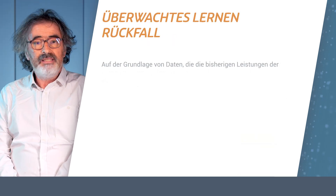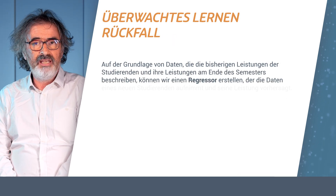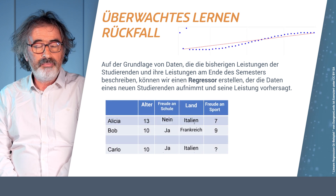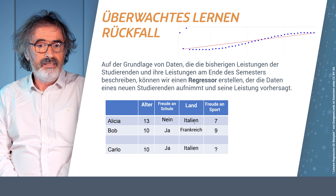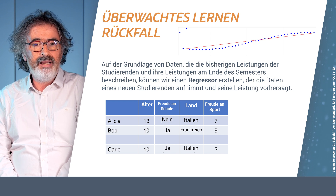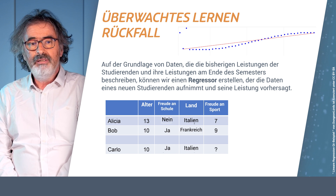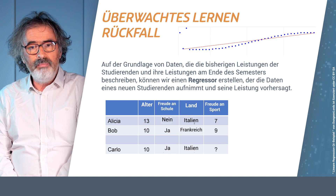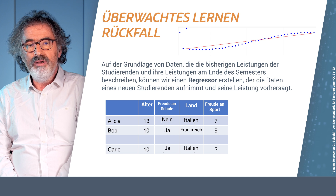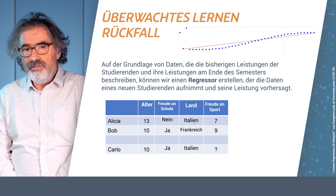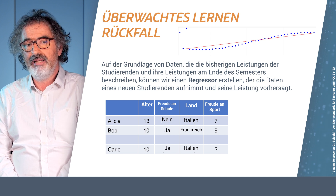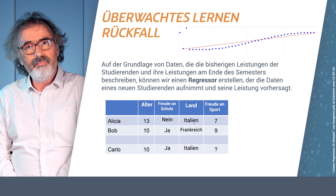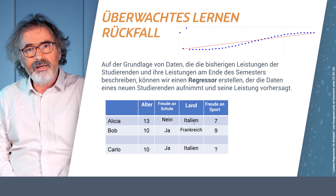Instead of predicting just yes or no, we could predict a number — a value — perhaps a grade, in the case of Alicia, Bob, and Carlo. Again, we have data for Alicia and Bob for which we know the outcome: we know their grade in mathematics. Now we would like to predict the grade in mathematics for a new pupil, Carlo.